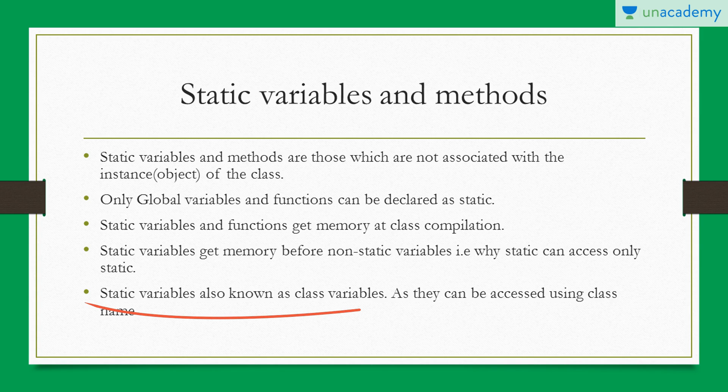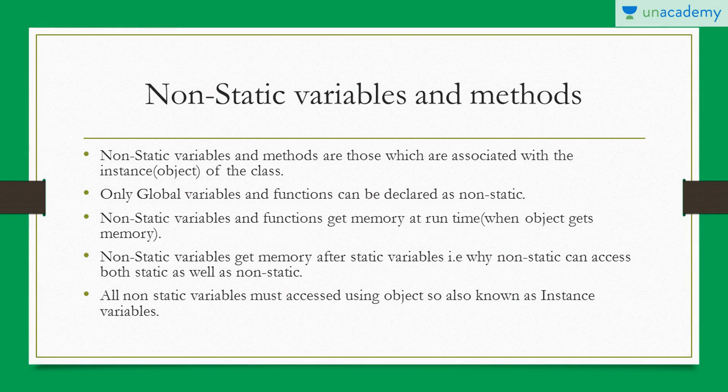Static variables are also known as class variables, because they get memory at class compilation and can be invoked using the class name instead of an object name. That is why they are known as class variables.